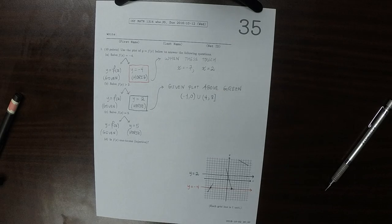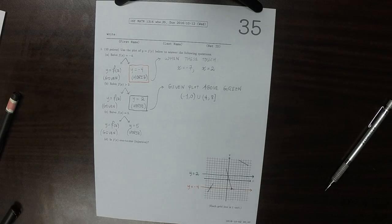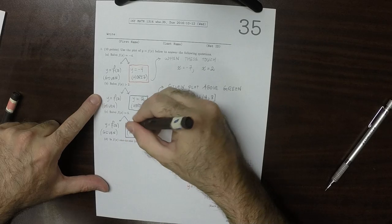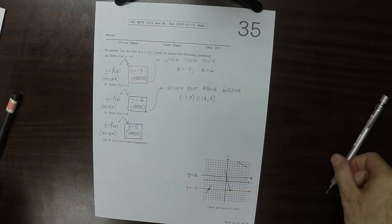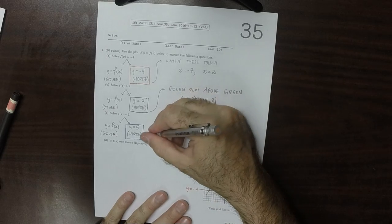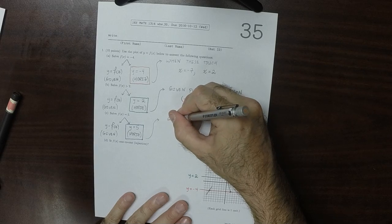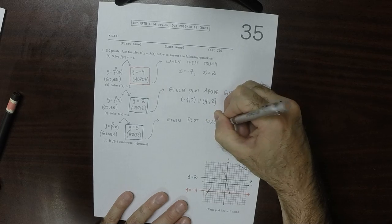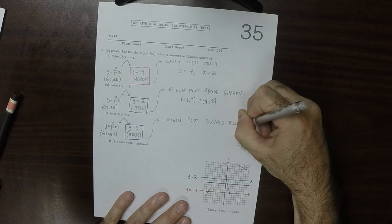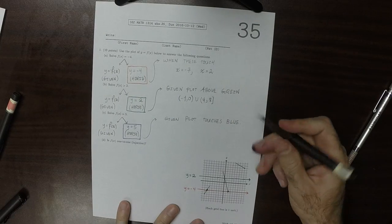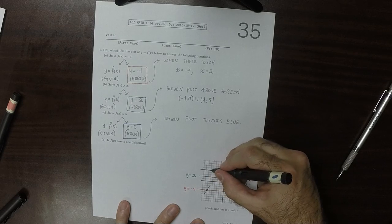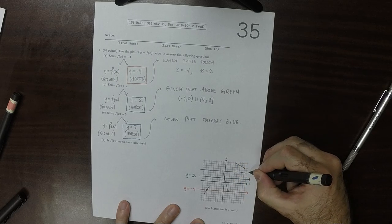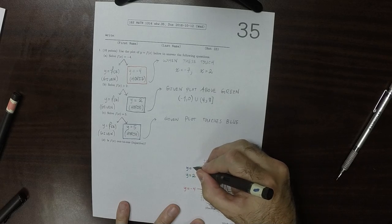I'll draw that in blue, if I can find my blue pen. Where is it? Up here. And again, because it's equality, the question becomes when the given plot touches the blue plot. Let's make the blue plot. So that'd be here. I'm going to skip over that so I don't obscure it. Okay. So this is y is 5.